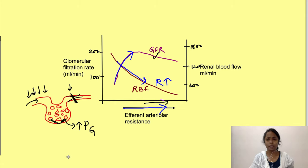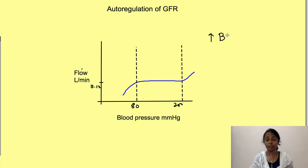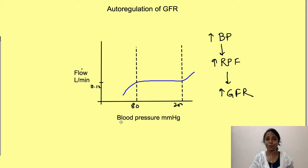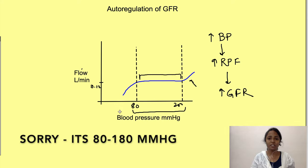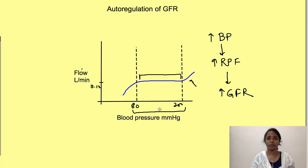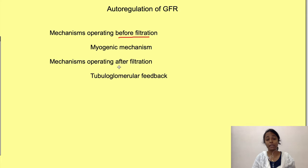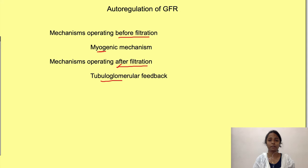The body regulates glomerular filtration rate by changing afferent and efferent arteriole resistance. With increased blood pressure, GFR is held constant within a range of approximately 60 to 140 mmHg mean arterial pressure — this is known as autoregulation of GFR. There are two mechanisms: one operating before filtration called the myogenic mechanism, and one operating after filtration called tubuloglomerular feedback.